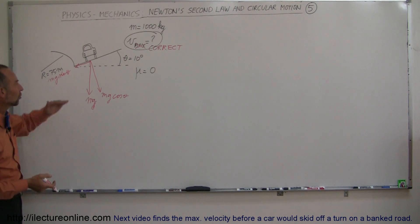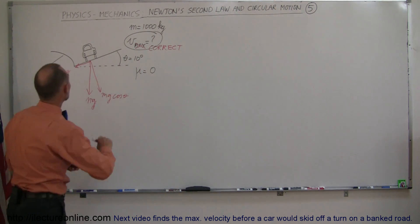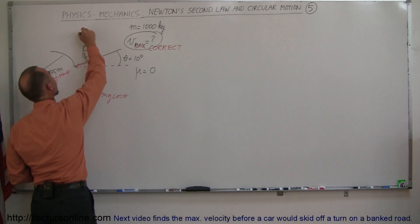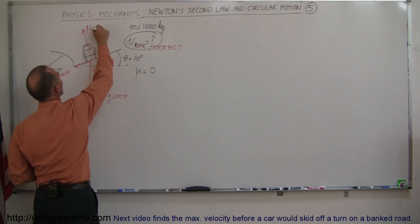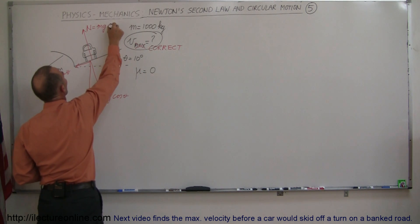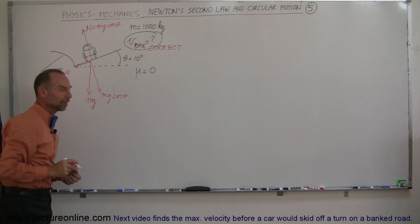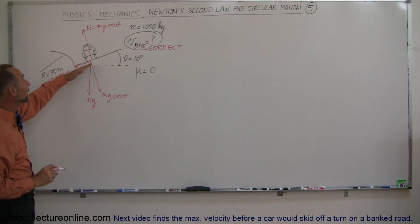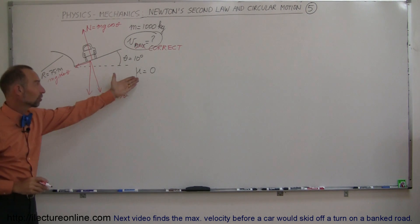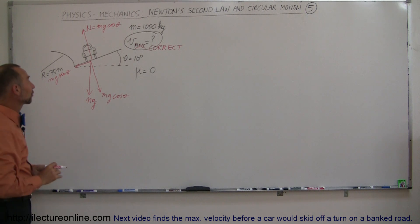The mg cosine theta pushes the car into the road, and of course the road pushes back, Newton's third law. So Newton's third law says there's an opposite force N, which is equal to the mg cosine theta, it's the normal force of the surface pushing back. Now normally that's the component that would then cause friction to exist, but since coefficient friction is zero, there's no friction at all here.